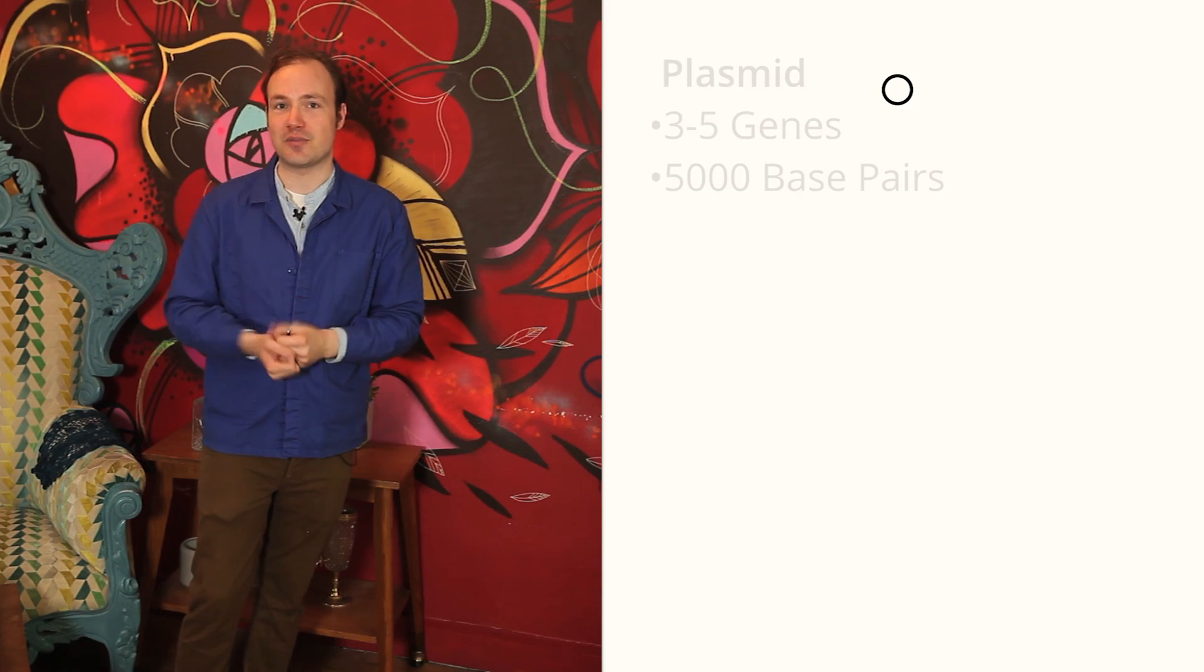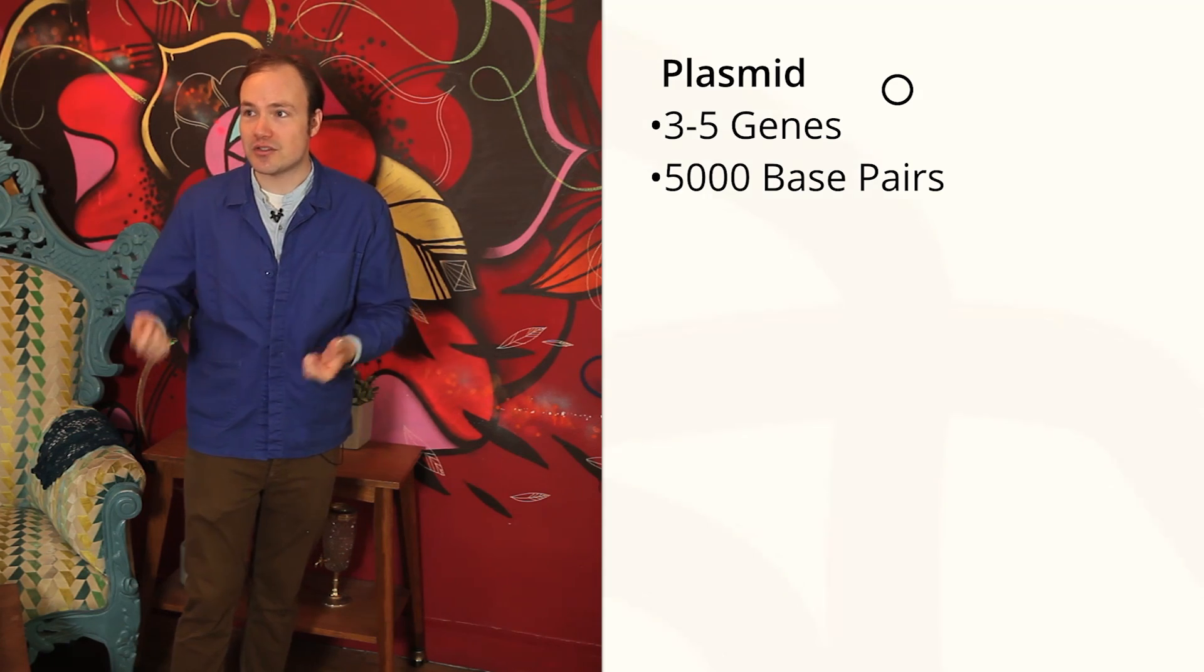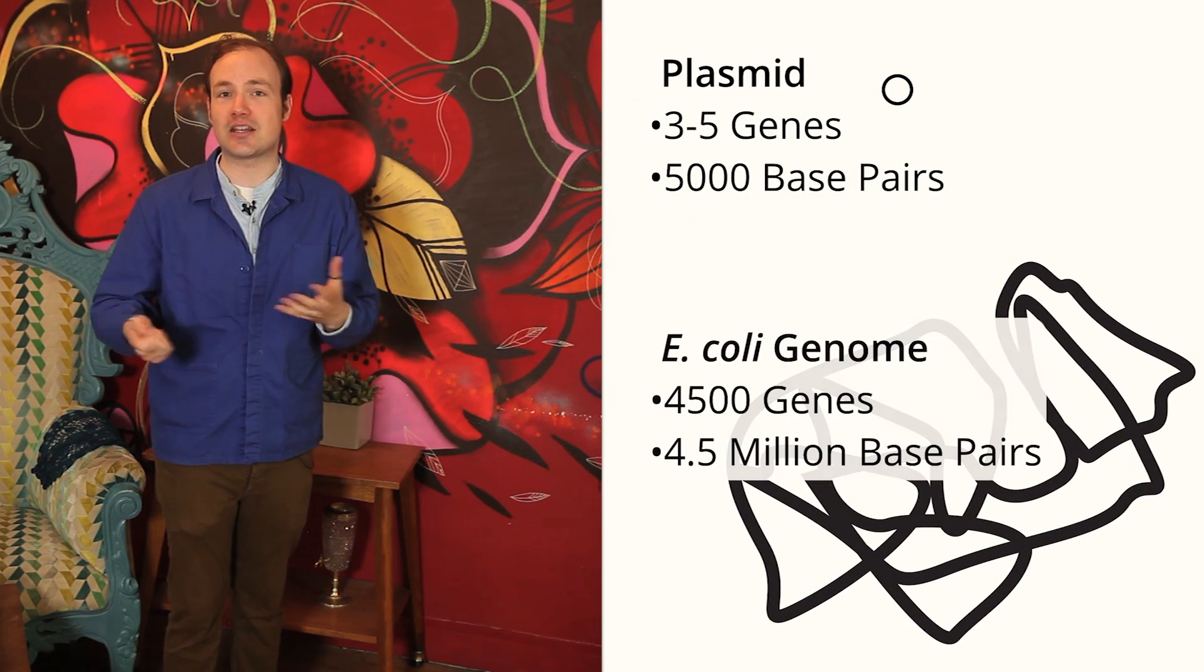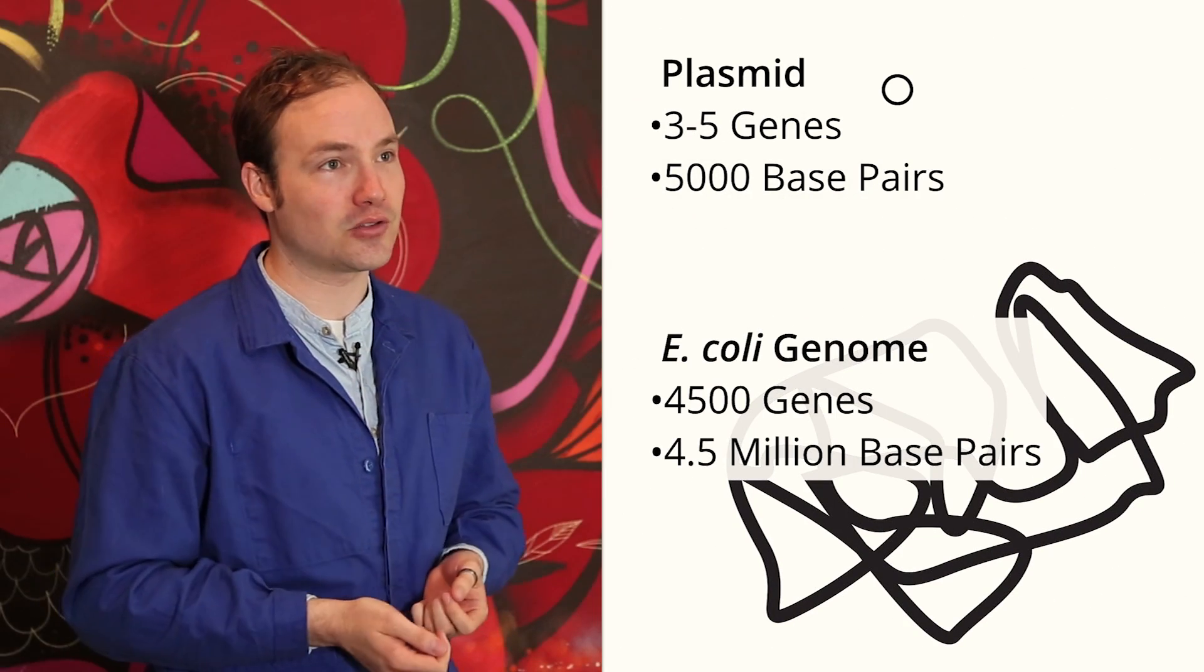A plasmid is a circular piece of DNA. A typical plasmid might be 5,000 base pairs long. In comparison, the genome of a bacterium like E. coli is over 4,000,000 base pairs long.